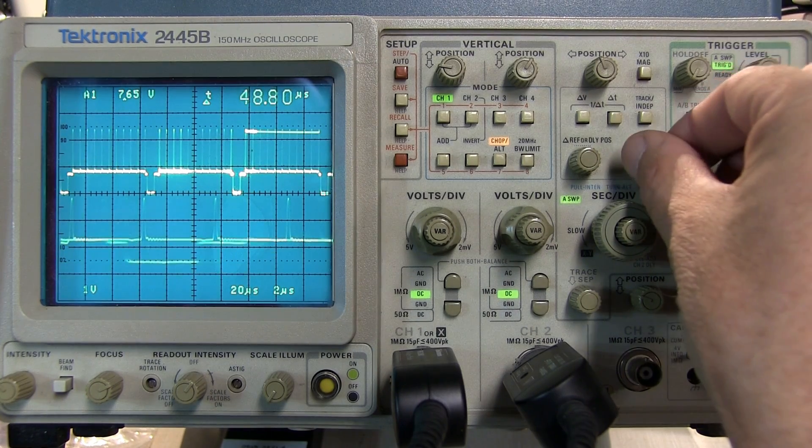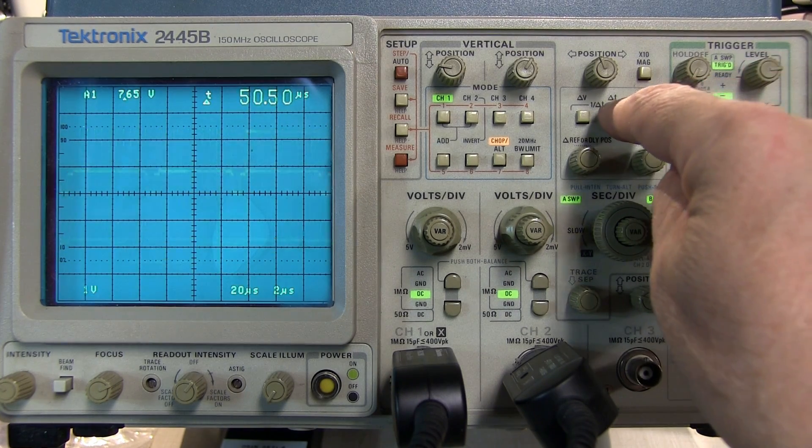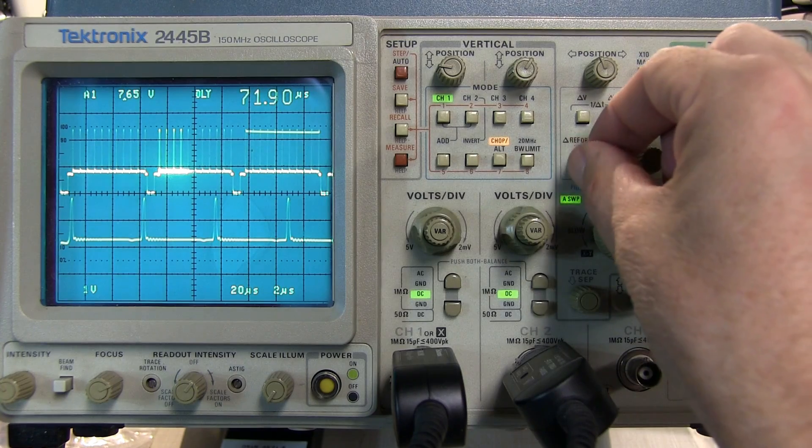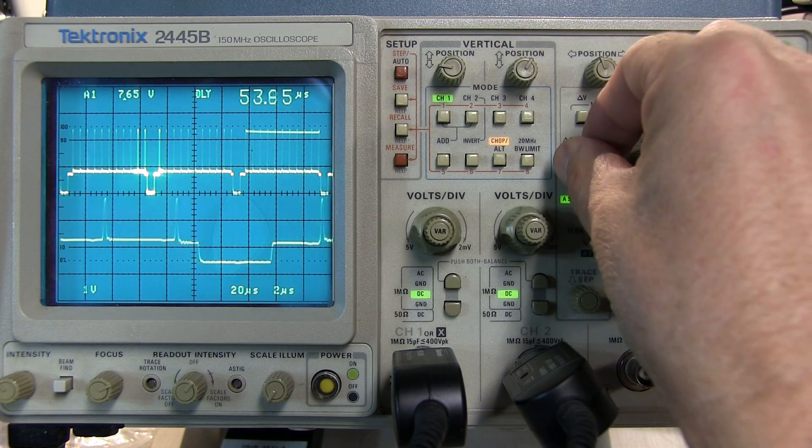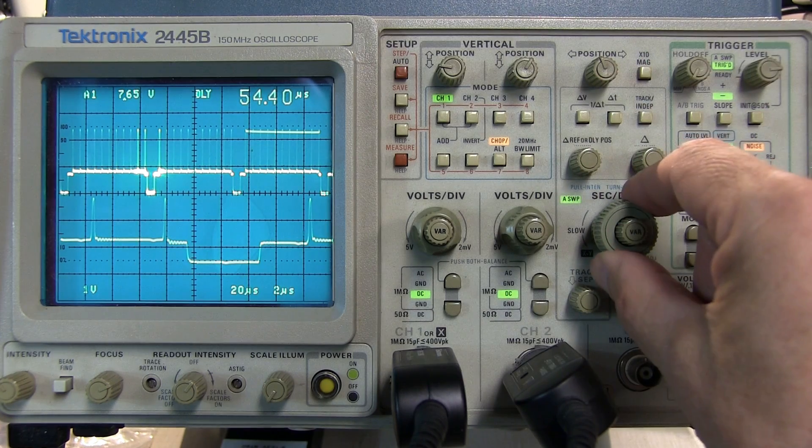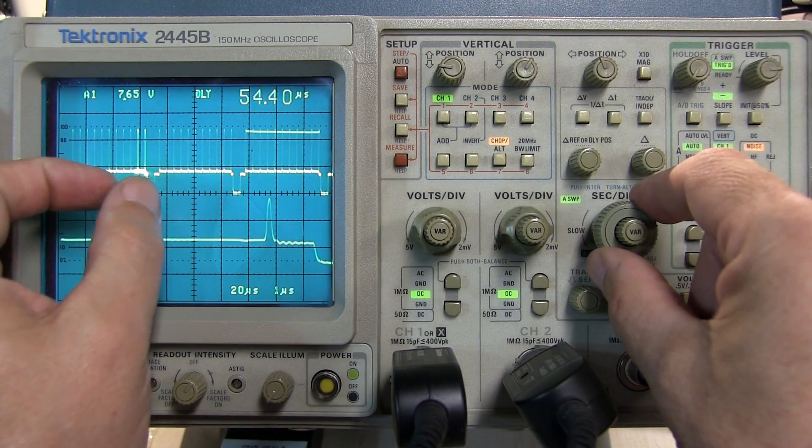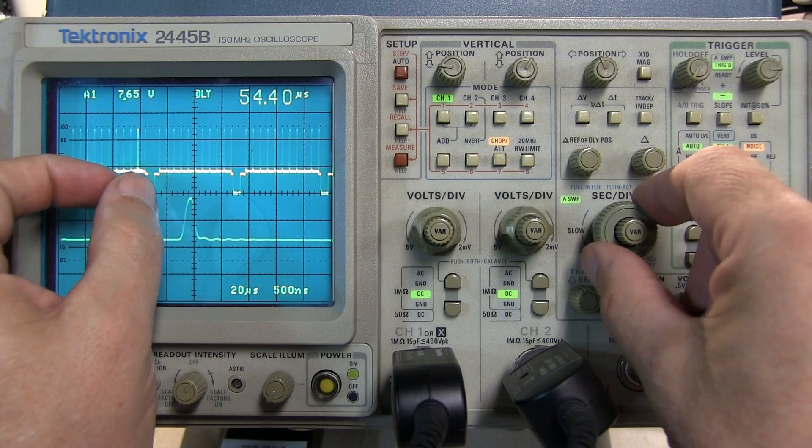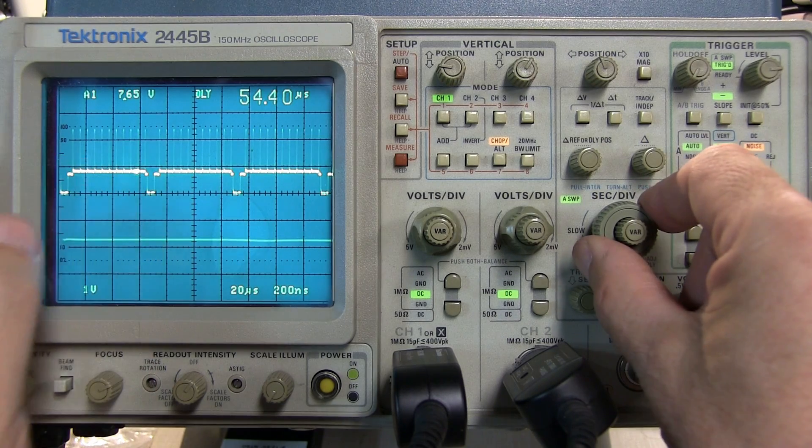Okay so let's turn off the Delta T function here and get back to just a single delayed sweep on the B channel. One other thing I want to point out is if we start making the B sweep much faster obviously that makes the intensified portion here very narrow but what it can also do is start to make the B sweep kind of dim.